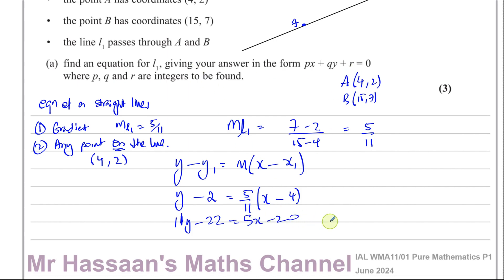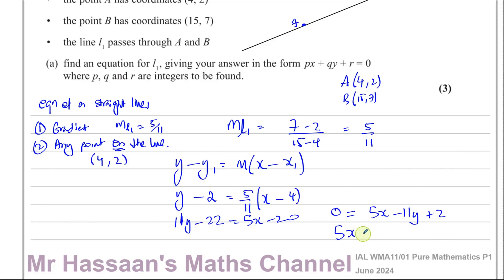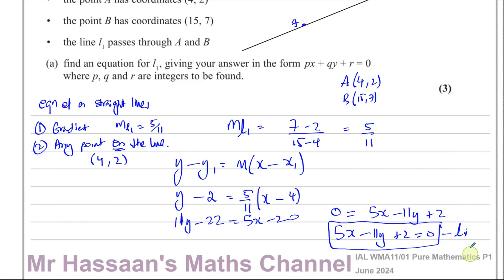We want it in the form Px + Qy + R = 0. Rearranging: subtract 11y from both sides and add 22 to remove constants, giving 5x − 11y + 2 = 0. This is the equation of line L1.